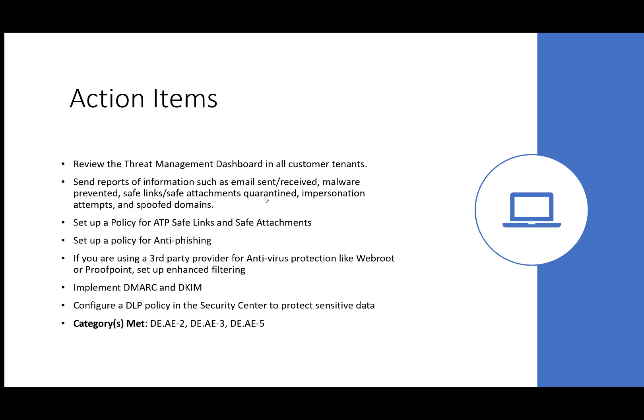For action items: definitely go in and make the review of the Threat Management Dashboard part of a quarterly process. You want to refine policies as the landscape shifts and see trends in the tenant so you can better protect them over time. Make sure that if you use priority tools for security, you're aggregating all that data so you can see it in one spot and maximize the changes you make across multiple solutions. Send reports to customers showing how many safe links and attachments were quarantined, and how many times they got spoofed and you protected them. Set up policies for ATP safe links, safe attachments, and anti-phishing.